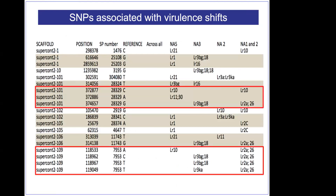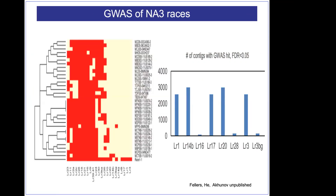Now that we had this data, we wanted to find SNPs associated with particular effector changes. We found that certain genes are scattered throughout the genome — LR10, LR30, 18, 2A, 26 — there just weren't any consistencies. When we did a GWAS, over 2,000 contigs were associated with a shift in LR21, and 2,500 contigs were associated with a shift in LR17 — so we just didn't see anything unique. We also used fast neutrons to try to do knockouts. We expose spores to fast neutrons using a nuclear reactor on campus, and look for spores that could overcome the particular resistance gene in the Thatcher isogenic lines — LR2C and LR26.